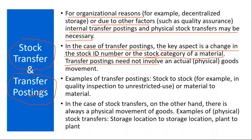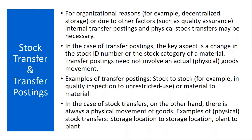Transfer postings do not involve an actual goods movement. Examples of transfer posting include stock-to-stock — meaning quality inspection to unrestricted use. Sometimes stock is in quality inspection, and once that inspection is completed, you move it to unrestricted use, just changing the stock category. Another example is material-to-material transfer.